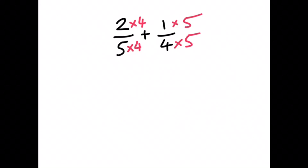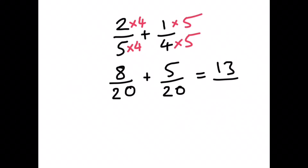What we're doing here is multiplying the left-hand fraction by 4 on the top and bottom, and the right-hand fraction by 5 on the top and bottom. So on the left we get 8 over 20, and on the right we get 5 over 20. We now have 8 twentieths plus 5 twentieths, which very simply makes 13 twentieths.